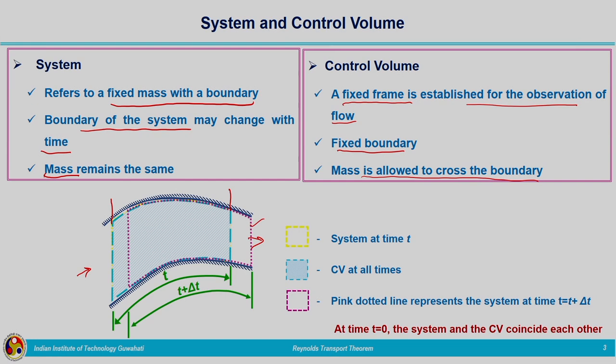At time t = 0 the system and the control volume coincide each other. The control volume always remains at that particular location if we are considering a stationary control volume. There are certain problems which consider a movable control volume, but in this course we will be making use of a stationary control volume fixed in space. As time changes there will be no change to the control volume, but the system will change its position as time changes.